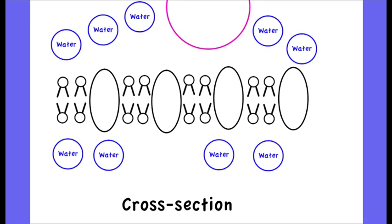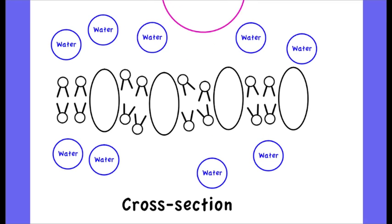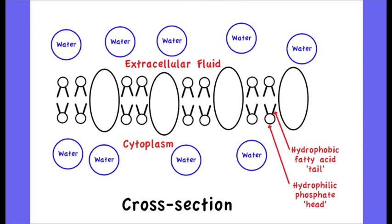So if the membrane encounters a disturbance, as I'm simulating here, although the components may temporarily move apart, the phospholipids will reorientate themselves in the bilayer that they formed before with the hydrophobic fatty acid tails pointing inwards and the hydrophilic phosphate heads pointing outwards, and this maintains the structure of the cell membrane.